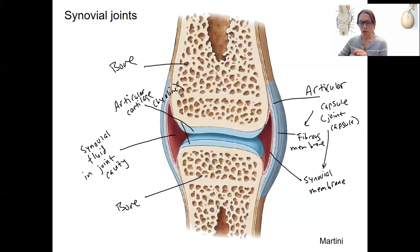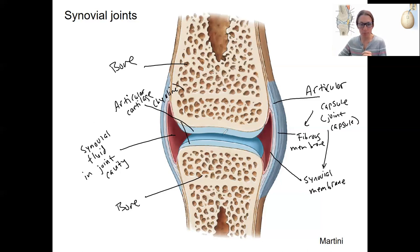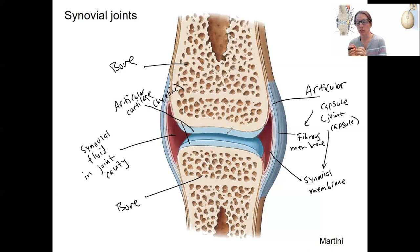One more thing before moving on: the synovial fluid. It's a viscous lubricating fluid that, by being in the joint cavity, helps absorb shock, prevents too much friction from occurring, and is also involved in nutrient distribution to the local tissue, such as articular cartilage. Pretty important stuff.